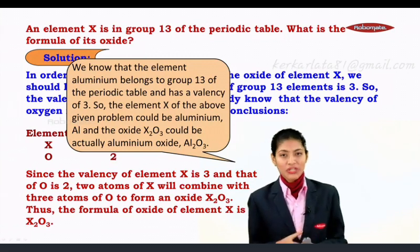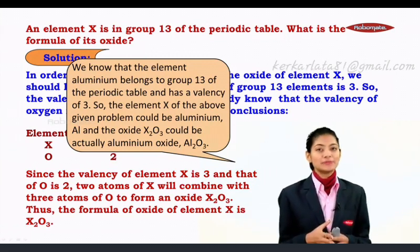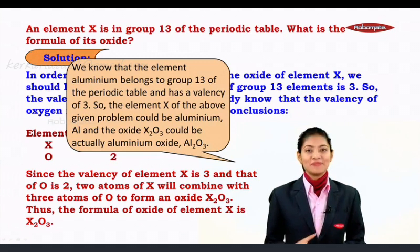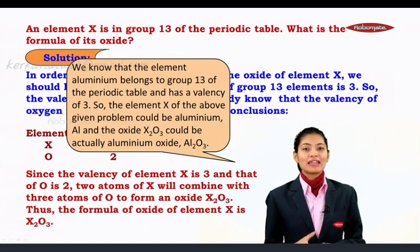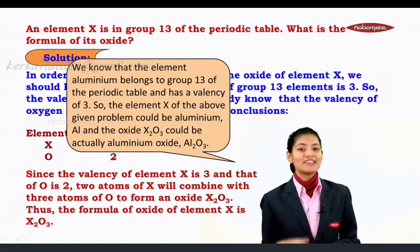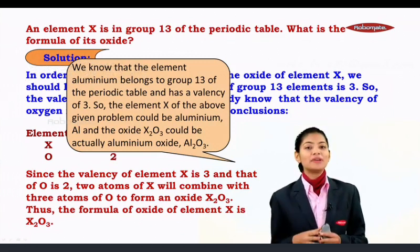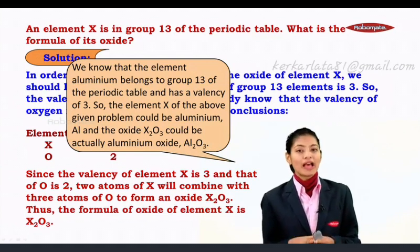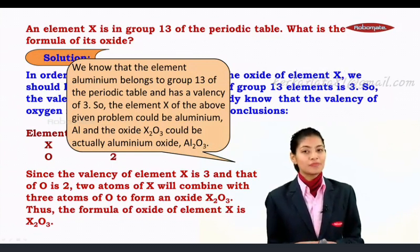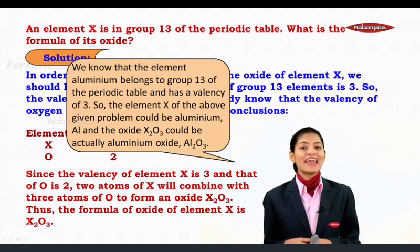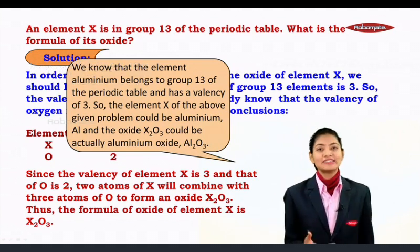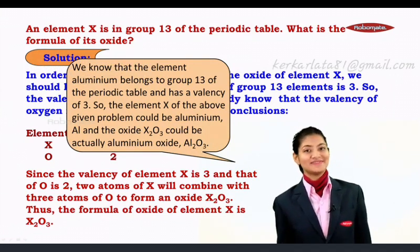We know that aluminium belongs to group 13 of the periodic table and has a valency of 3. So element X in this problem could be aluminium (Al), and the oxide X₂O₃ would be aluminium oxide, Al₂O₃.